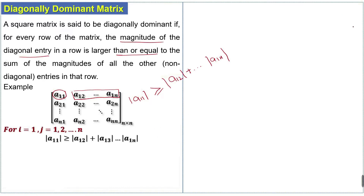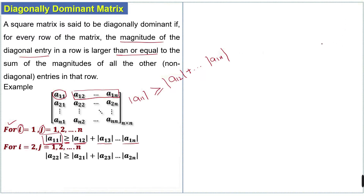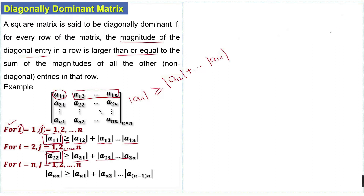Here i represents the row number and j represents the column. For the first row and all columns, the magnitude of the diagonal entry is greater than or equal to the sum of magnitudes of all other entries in that row. Similarly, for the second row and all columns, the diagonal entry should be larger than or equal to the sum of all other non-diagonal entries, and similarly for the nth row.